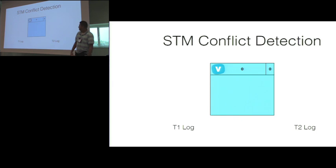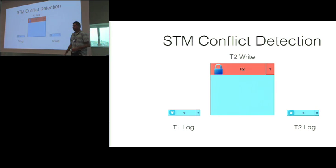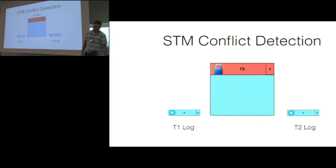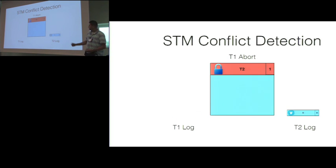For STM conflict detection: the read-read case has no conflicts since the version number is the same. For a read-write case, imagine thread 1 reads an object, then thread 2 does a write, placing its transaction ID into the object header. When T1 wants to commit and validates its log, it detects that the version it has does not match the current header, so T1 aborts and T2 can continue.